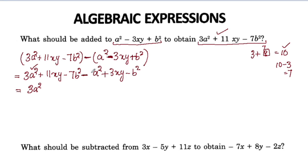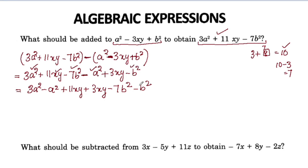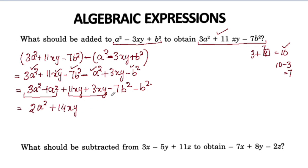Let's collect like terms. We change 3a² minus a²: 3 minus 1 is 2, giving 2a². For xy: -11xy plus 3xy — 11 plus 3 is 14, but with signs giving -14xy... wait, negative 7b².